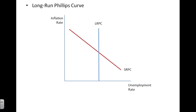The short-run Phillips curve shows us the inverse relationship between inflation and unemployment. As prices rise, unemployment falls. As prices in the economy fall, the unemployment rate rises.